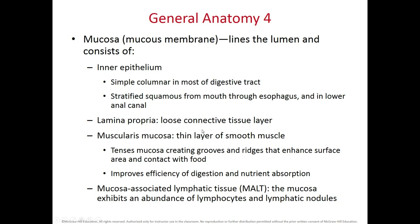The lamina propria is made of loose connective tissue. The muscularis mucosae is a thin layer of smooth muscle that, when it contracts, tenses the mucosa creating folds and ridges that increase the surface area for greater absorption. Within the walls of the mucosa we also sometimes find lymphatic tissue called MALT — mucosa-associated lymphatic tissue.